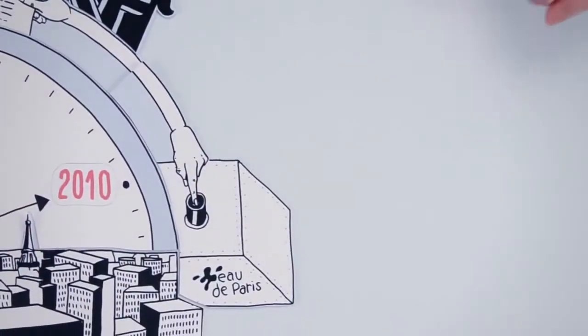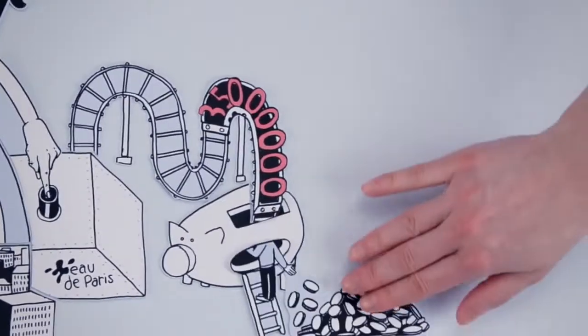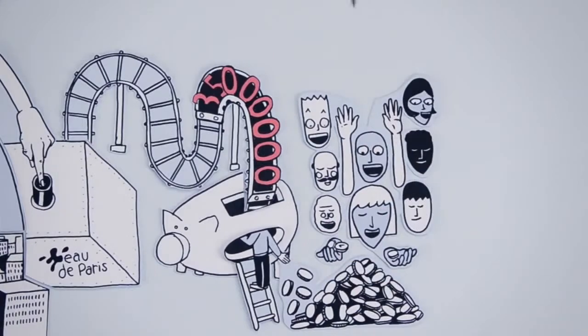By 2010, the new public entity, Eau de Paris, was operating and realized 35 million euros in direct savings in its first year. As a result, water tariffs were reduced by 8 percent.